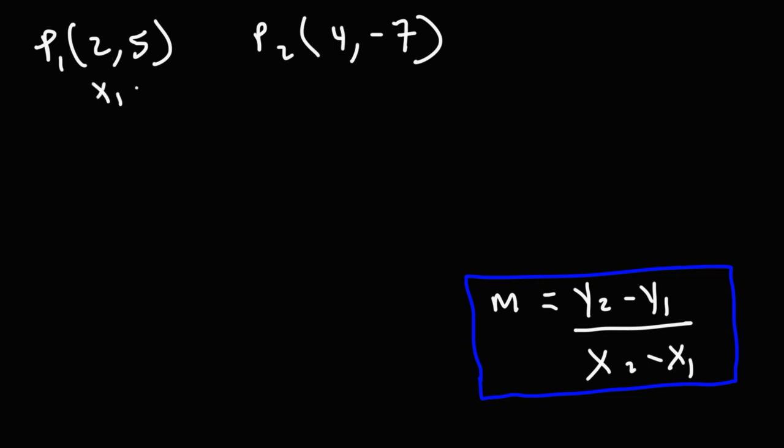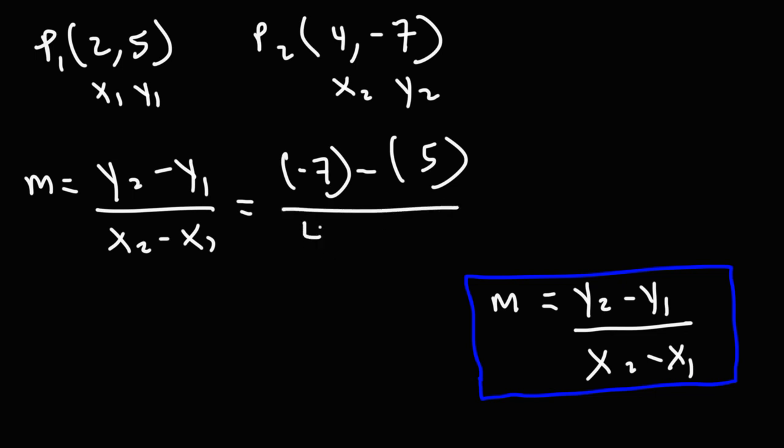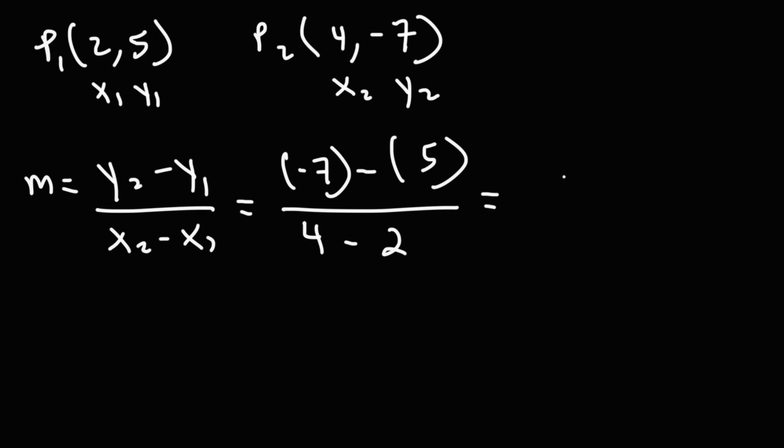We're going to call this x1, y1. This is going to be x2 and y2. So the slope is going to be y2 minus y1 over x2 minus x1. y2 is negative 7, y1 is simply 5, x2 is 4, x1 is 2. Negative 7 minus 5 is equal to negative 12. 4 minus 2 is 2, and negative 12 divided by 2 is negative 6.